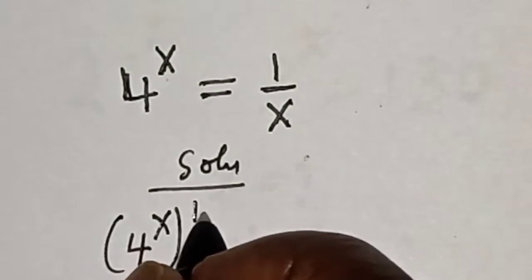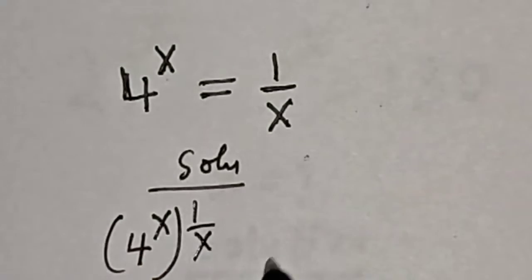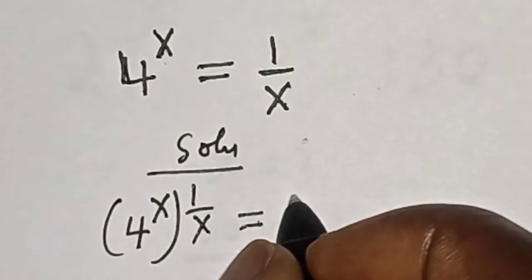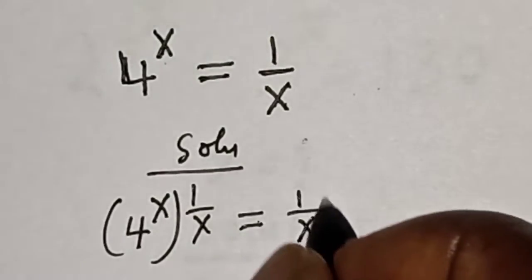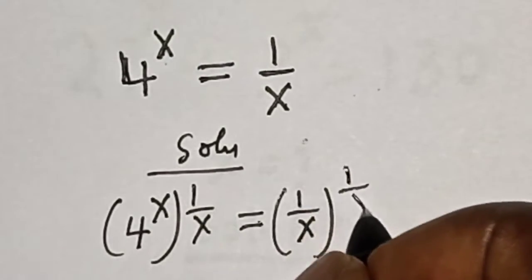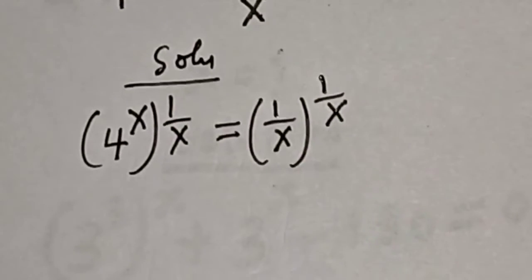all to the power 1 over s is equal to 1 over x, all to the power 1 over x.